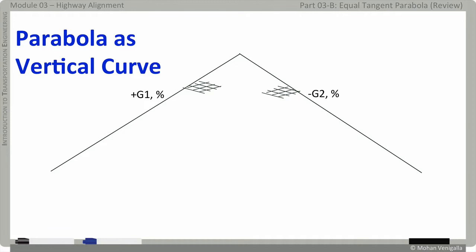G1 and G2 are expressed in percent. And what it means is a two feet rise for 100 horizontal would be plus 2 percent. And two feet fall for 100 feet horizontal would be minus 2 percent. That's how you should interpret it.